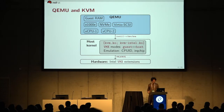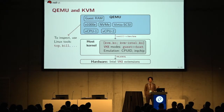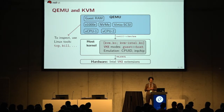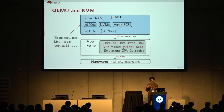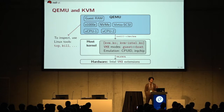KVM handles things like clock or CPUID instruction emulation in-kernel, so it doesn't have to do a heavyweight exit all the way to QEMU. Since QEMU is just another process on your host, you can use standard Linux tools like ps, taskset, kill, etc., to manage, examine, and inspect your QEMU and Nova-based QEMU instances.